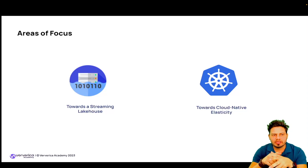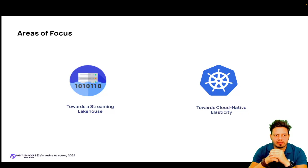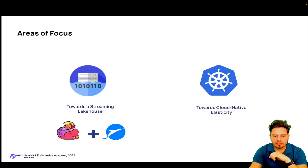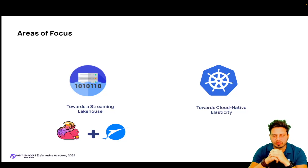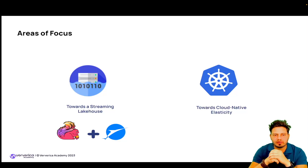The streaming lakehouse aims to provide more flexibility and expressiveness in the relational APIs and help data teams unlock more use cases by extending Flink's capabilities on the data lake. A big role there is played by Apache Paimon, which started as a Flink table store and now became a project of its own, allowing to extend Flink's capabilities on the data lake as a streaming storage.